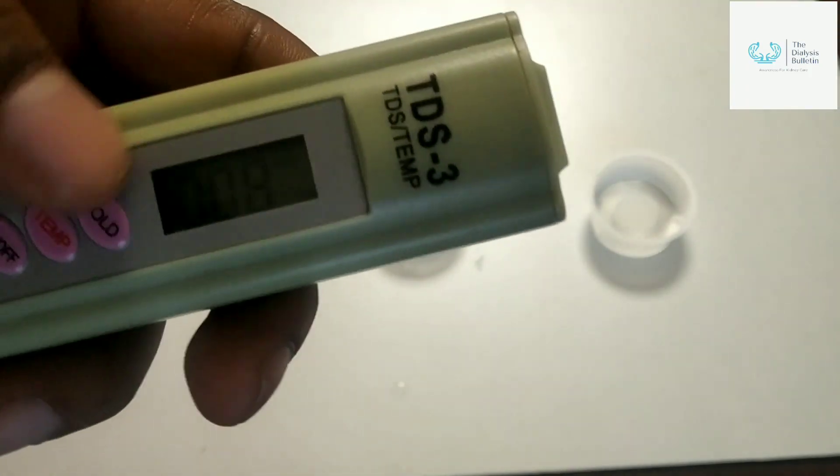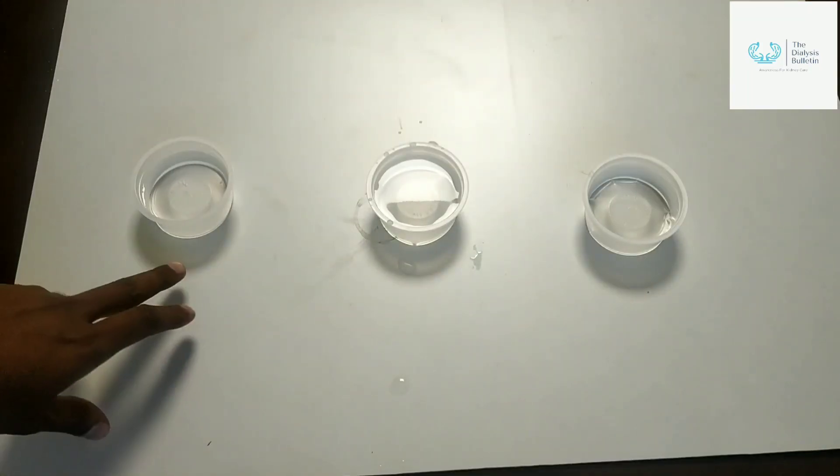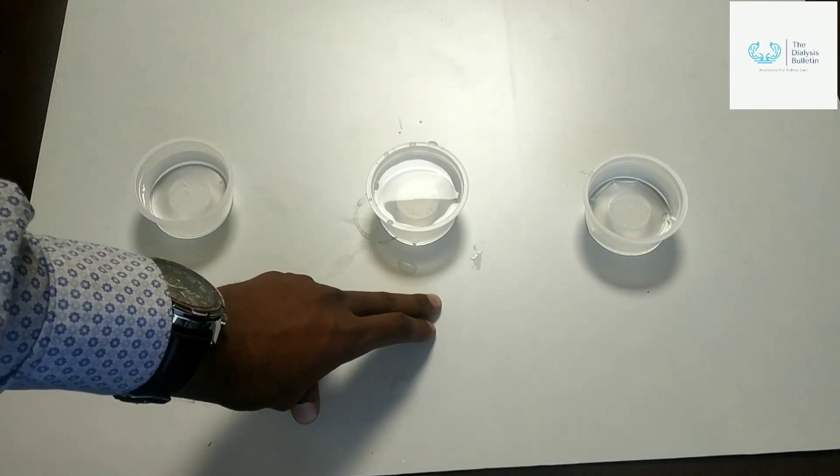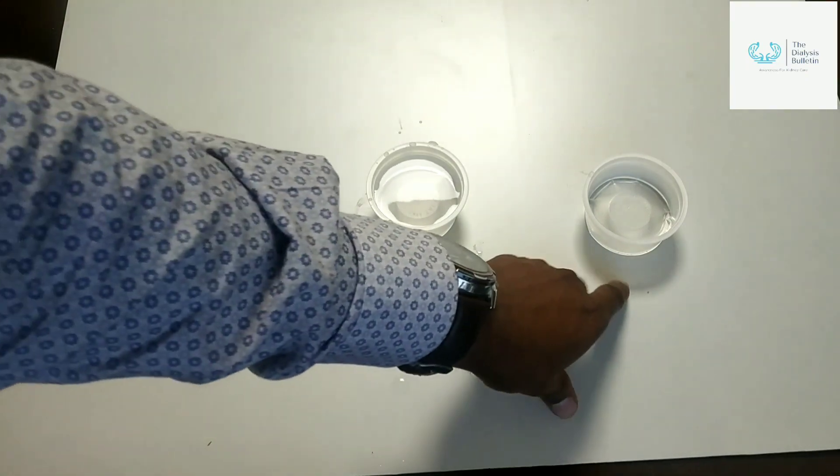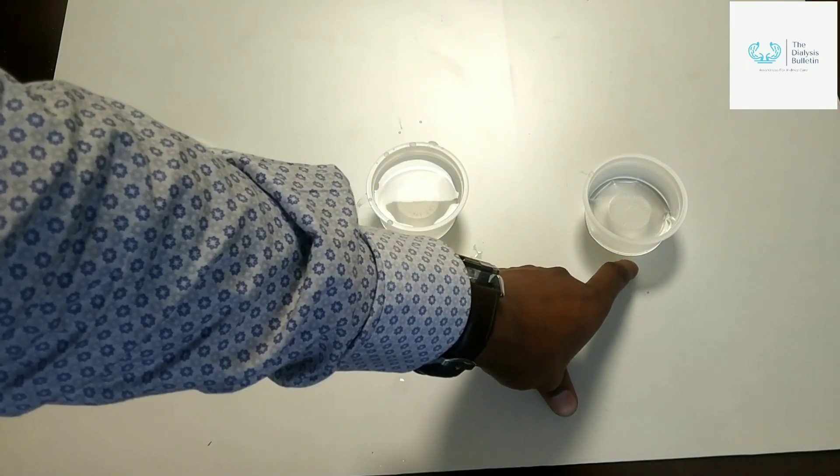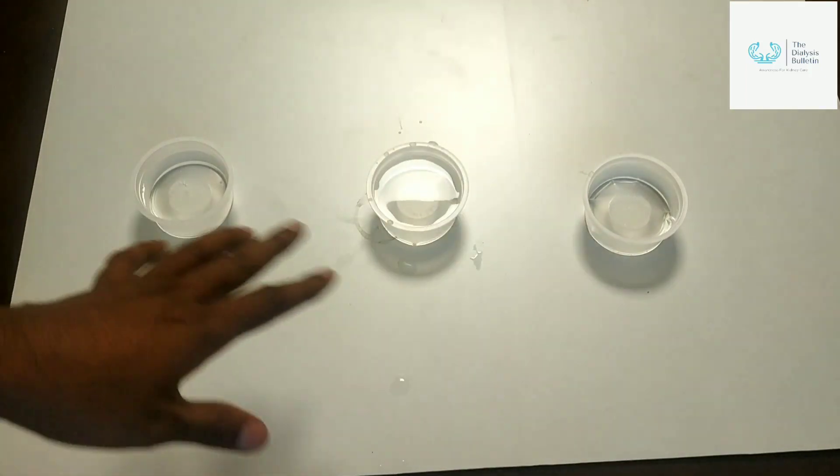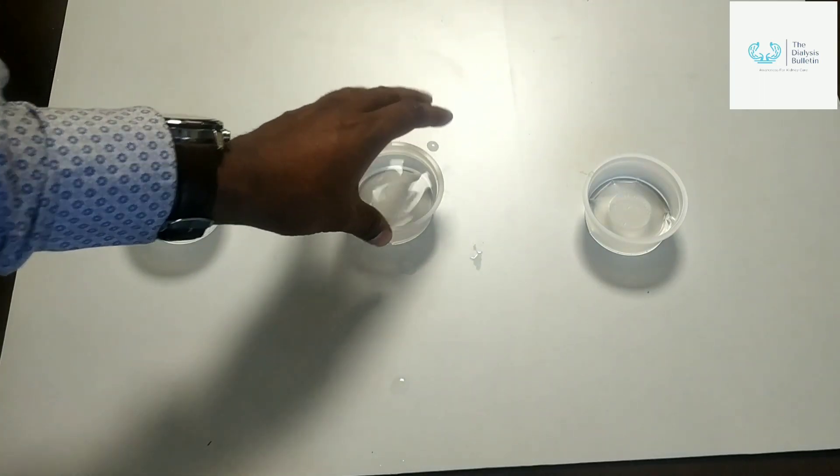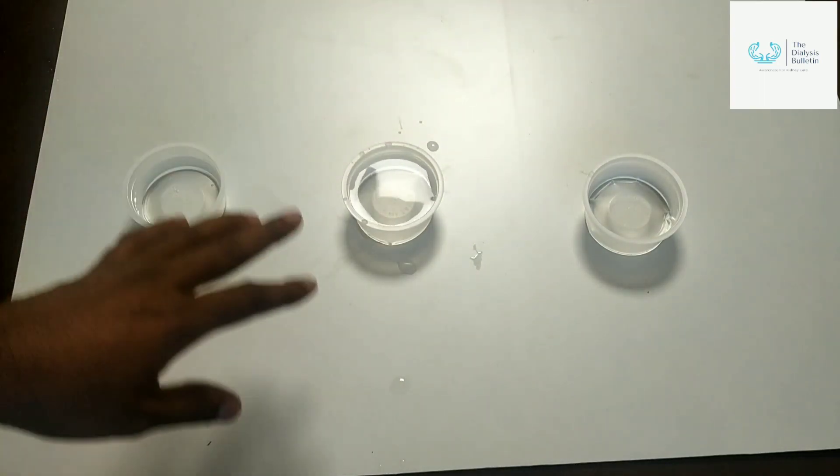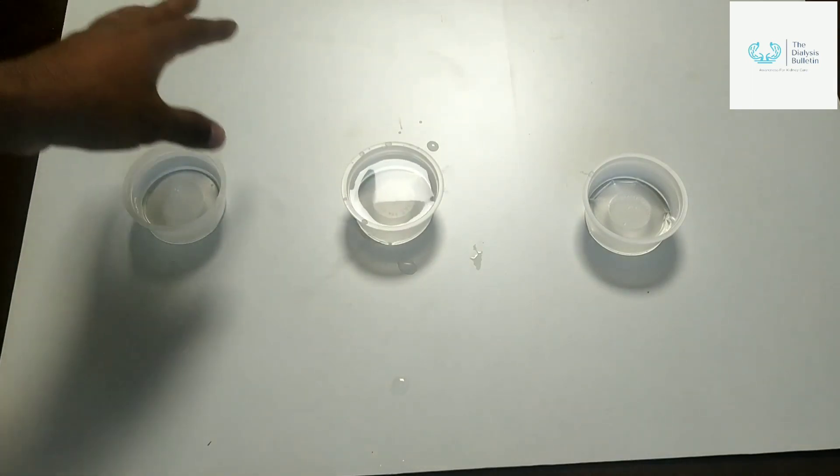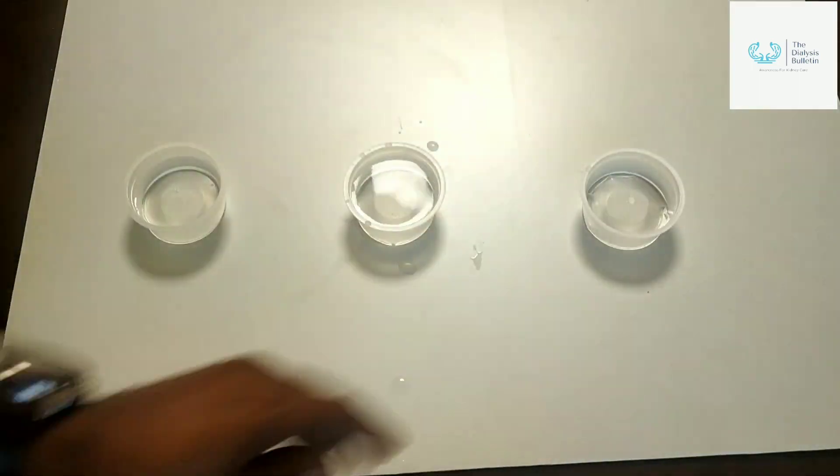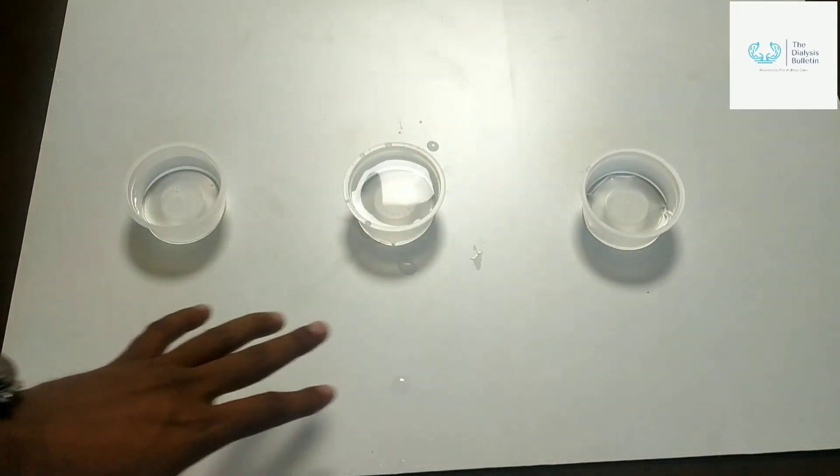As I said, here you are getting 9000 value, here you are getting approximately 153 value, and here you are getting 8 PPM. So this is a very big difference. You are taking raw water, and your softener is working well. It rejects all the calcium, magnesium, and salt elements. So after that, you are getting here 8 PPM of RO water. It's quite good.